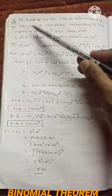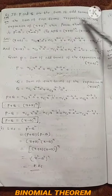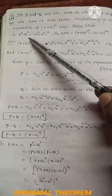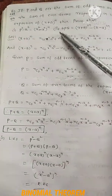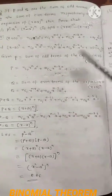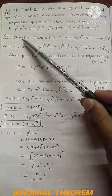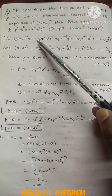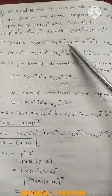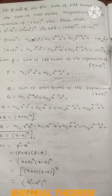Question number 6 — also a three-star question: if P and Q are the sums of the odd terms and even terms respectively in the expansion of (x+a)ⁿ, then prove that P² - Q² = (x²-a²)ⁿ. The expansion of (x+a)ⁿ by the binomial theorem is: nC0·xⁿ + nC1·xⁿ⁻¹·a + nC2·xⁿ⁻²·a² + ... + nCn·aⁿ.